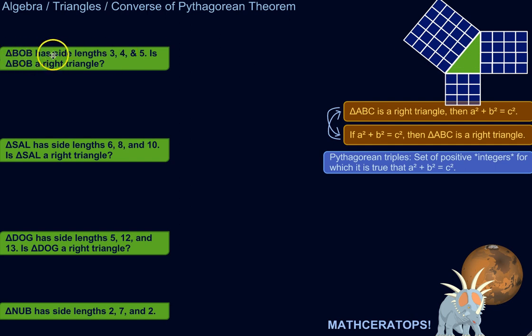So triangle BOB has side lengths 3, 4, and 5. Is BOB a right triangle? Well, let's see. So if it is a right triangle, then A squared plus B squared equals C squared. So let's see if A squared plus B squared does equal C squared. It doesn't really matter what you call A and what you call B, because B squared plus A squared is the same as A squared plus B squared, so it doesn't really matter if you flip-flop the A and B.